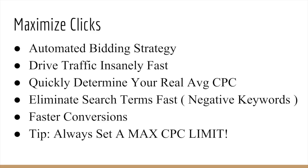One tip with maximized clicks: you always want to set a max CPC limit. When you create your campaign and set it to maximize clicks, Google will ask you what CPC you want to cap the campaign at, which I usually start at a dollar. The reason being is if you leave that max CPC limit blank, Google can go ahead and bid an outrageous amount for a very cheap keyword — Google can actually bid $6 for a keyword that's probably worth maybe $2. Setting a max CPC limit is basically like a life vest and will save you from losing a ton of money.